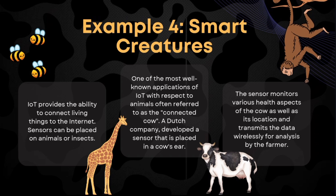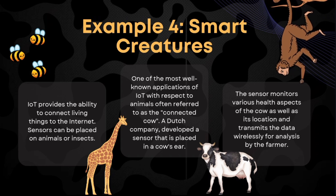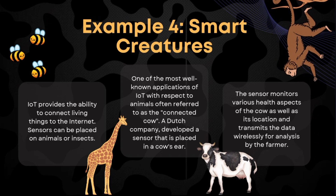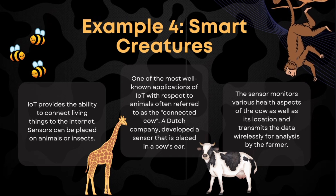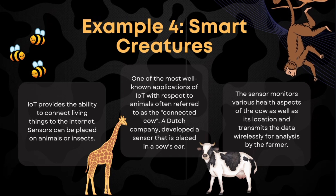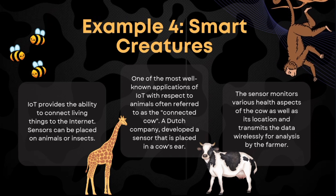Sensors can be placed on animals or insects. A Dutch company has developed a sensor that is placed in cows. The sensor monitors various health aspects of the cow, as well as its location, and transmits data wirelessly for analysis by the farmer.